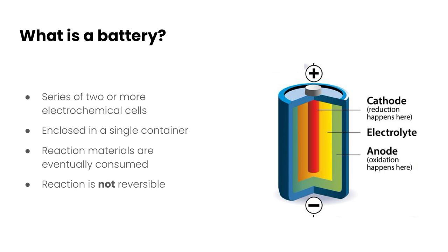So just to start out with and refresh our memory, a battery is a series of two or more electrochemical cells. So these are also primary cells.